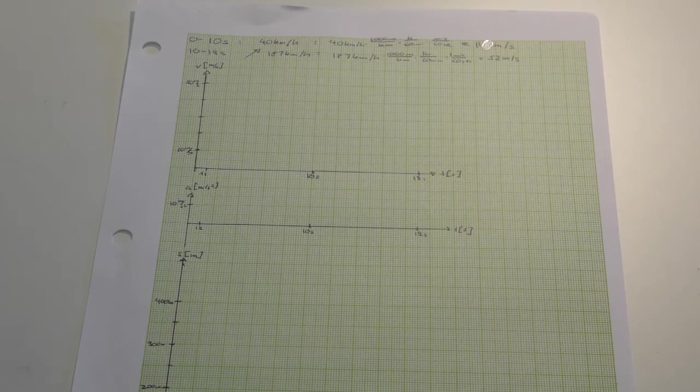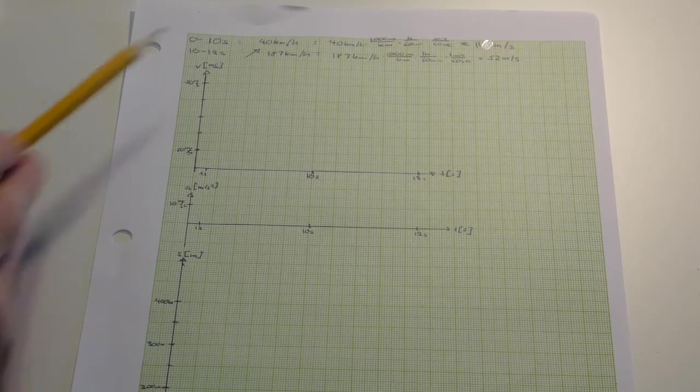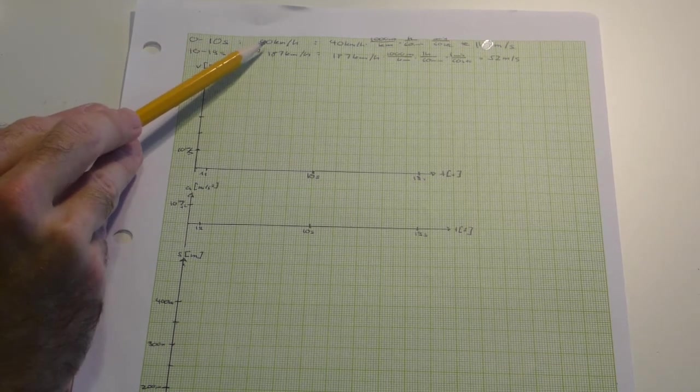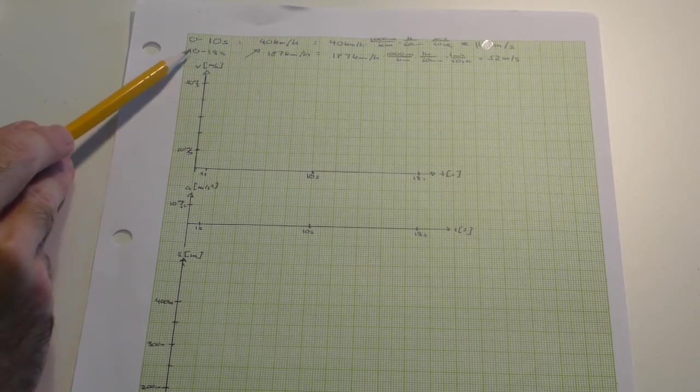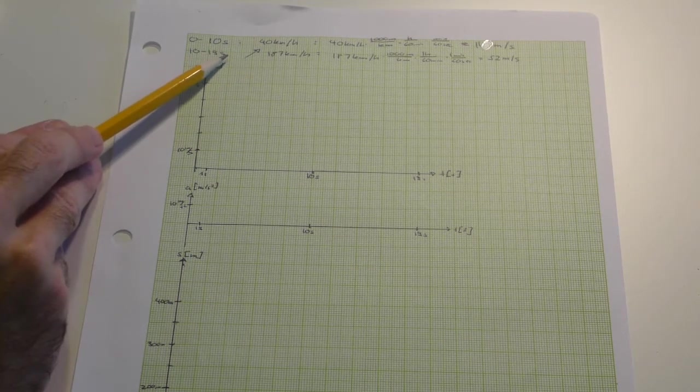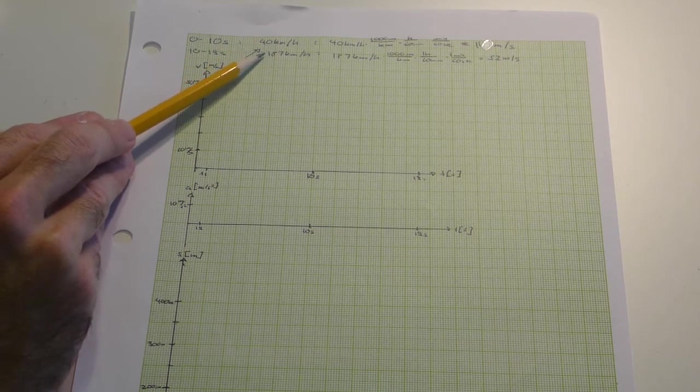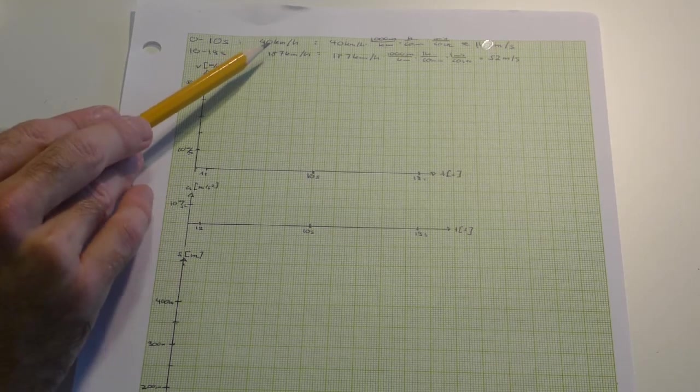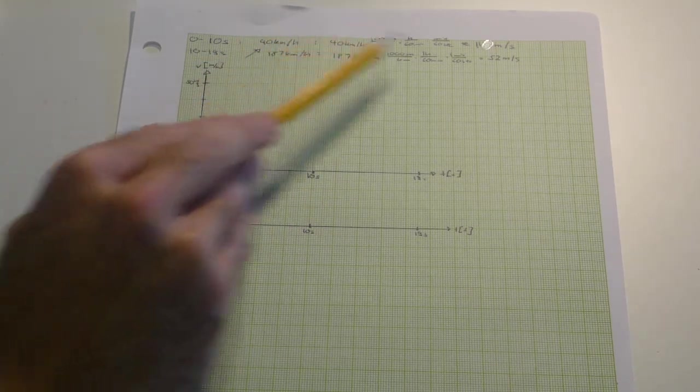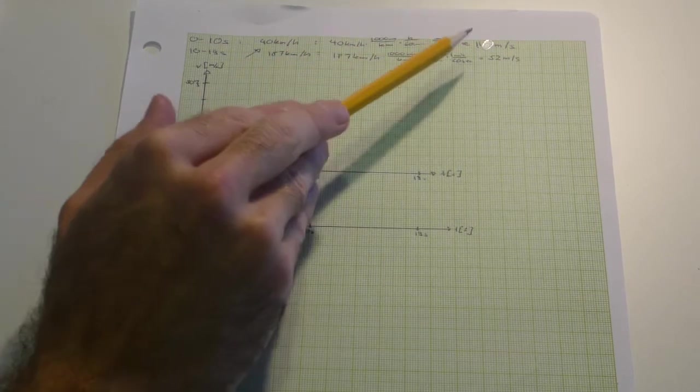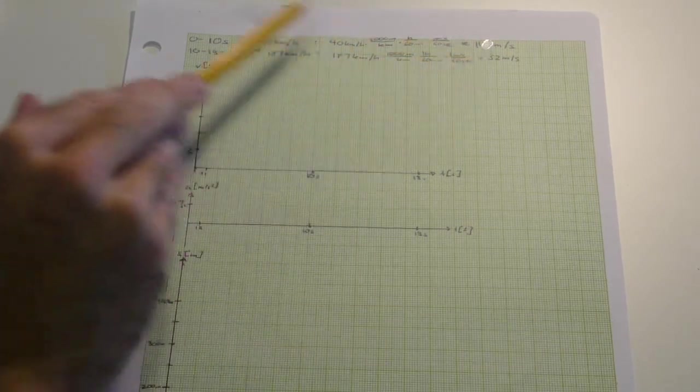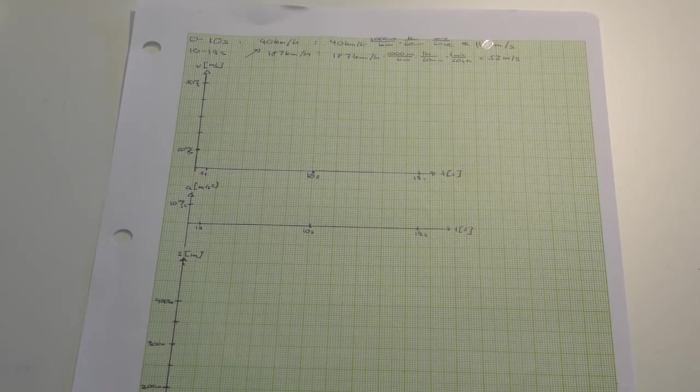Here we have a car again that for the first 10 seconds drives at 40 km an hour and then in nine seconds accelerates uniformly to 187 km an hour. They already calculated what these velocities are in meters per second because it's much easier to deal with SI units than to deal with different units at the same time.